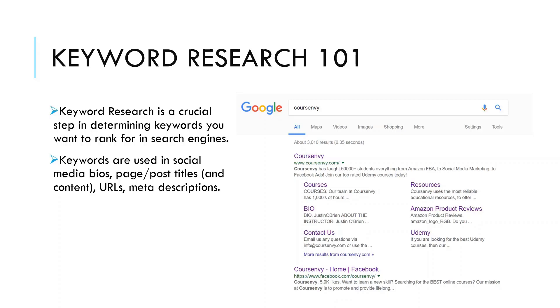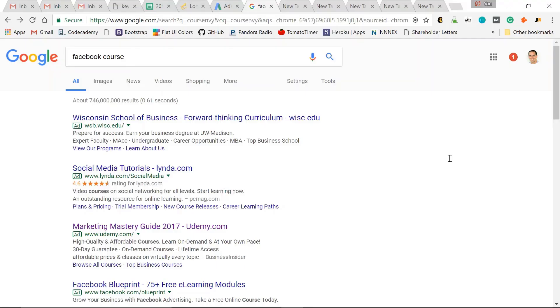Quickly scanning it: Amazon FBA — big keyword — social media marketing, Facebook ads, and so on. So here's an example of an organic search.